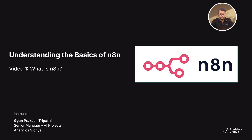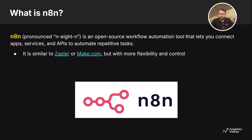In this video, we'll dive deeper into what N8N really is, how it works, and what makes it so popular for automating all kinds of tasks. N8N is an open-source automation tool, just like Zapier or Make.com, but with way more flexibility. You can connect your favorite apps like Gmail, Notion, Slack, and even APIs to build powerful automations without writing a ton of code. And the best part? It's free and customizable.